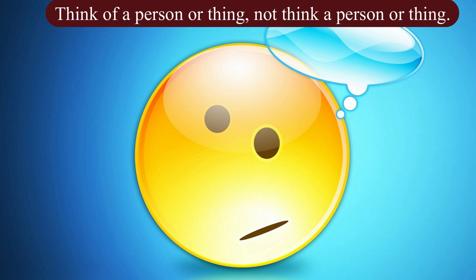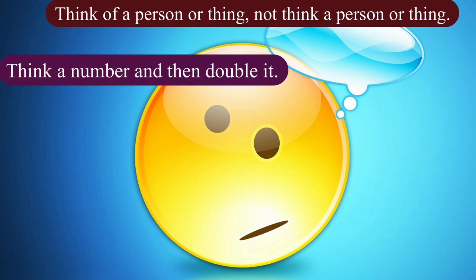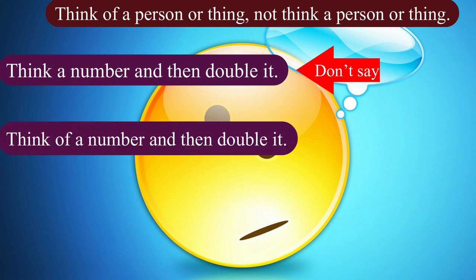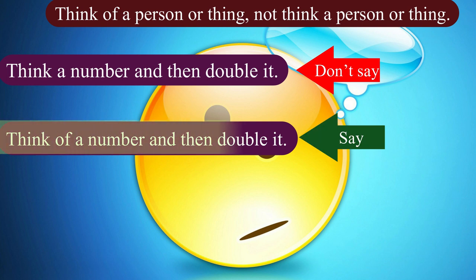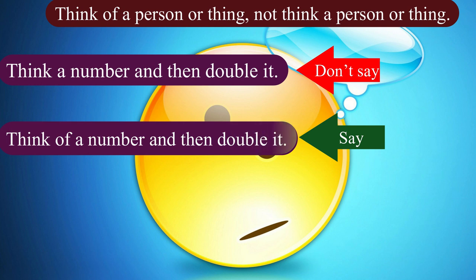Here is another example: 'Think a number and then double it.' The correct form is: 'Think of a number and then double it.' 'Think of' is a fixed expression, so we cannot make any change in it.